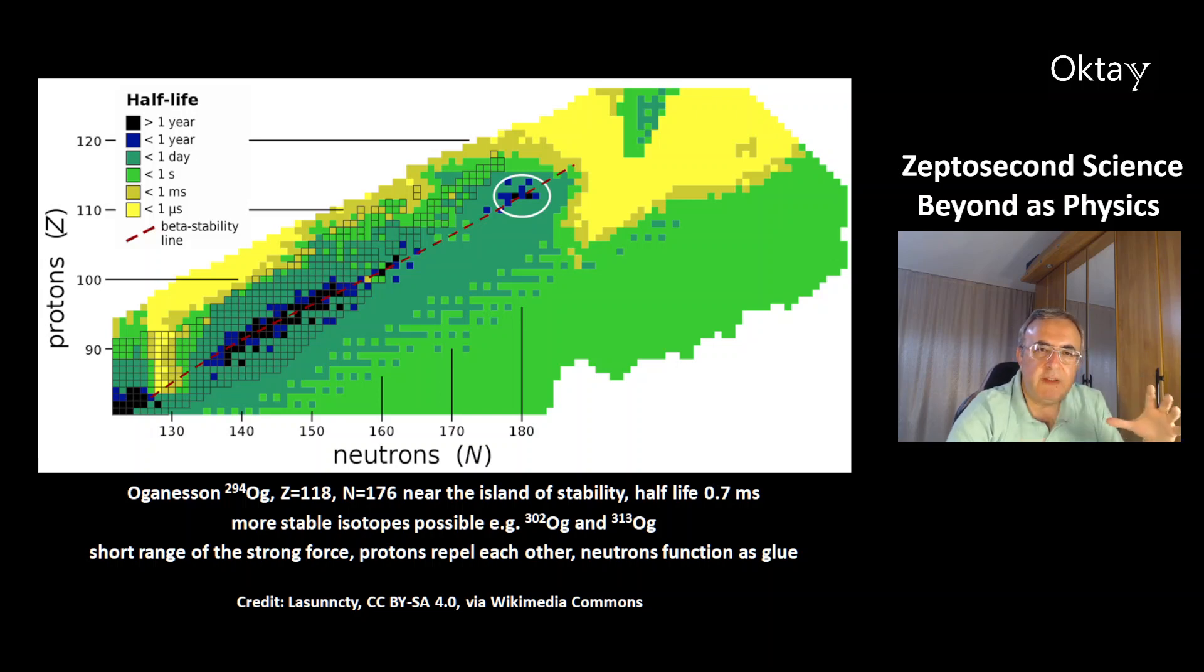The problem with the super-heavy nuclei is that the strong force is the strongest of the four fundamental forces in physics. But it has a very short range. And in the very big heavy nuclei, the protons repel each other. The neutrons have the function of glue. That's why the super-heavy isotopes have many more neutrons than protons.